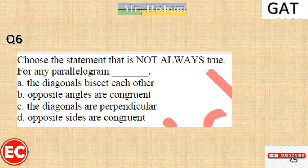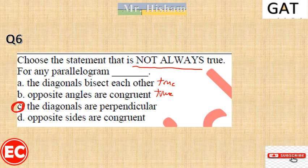Question: choose the statement that is not always true for the parallelogram. Do the diagonals bisect each other? Yes, that is true. Are opposite angles congruent? Yes, that is true. Are the diagonals perpendicular? No — this is not always true for a parallelogram; it is only true for the rhombus. Are opposite sides congruent? Yes, that is true.